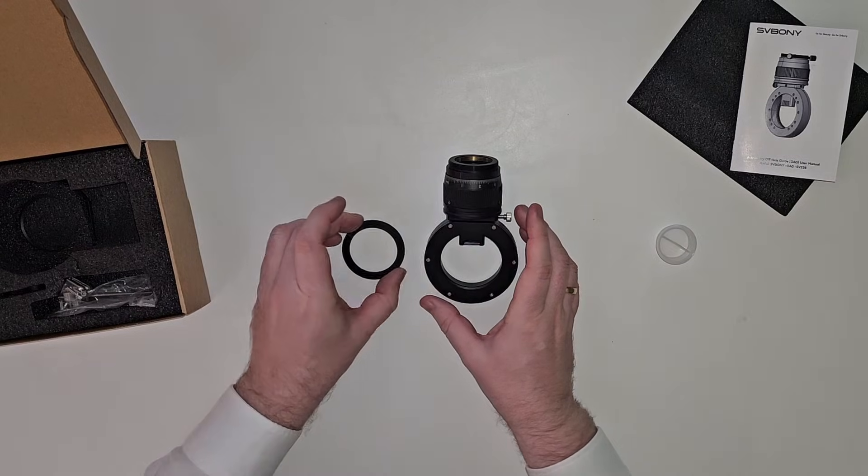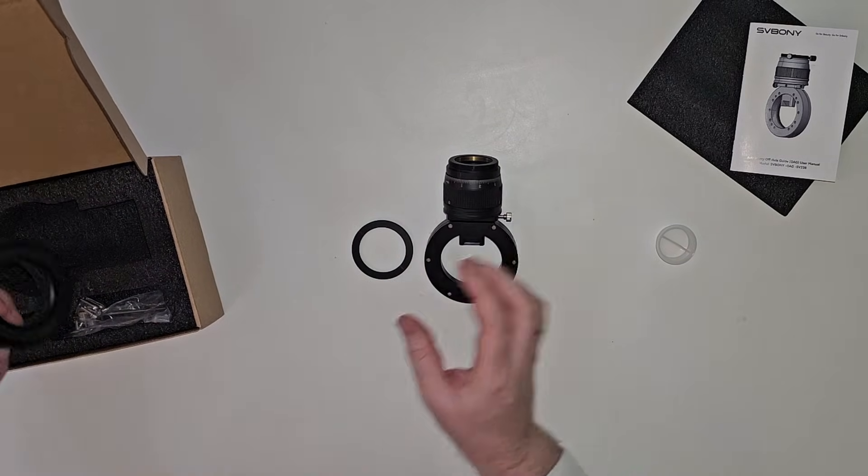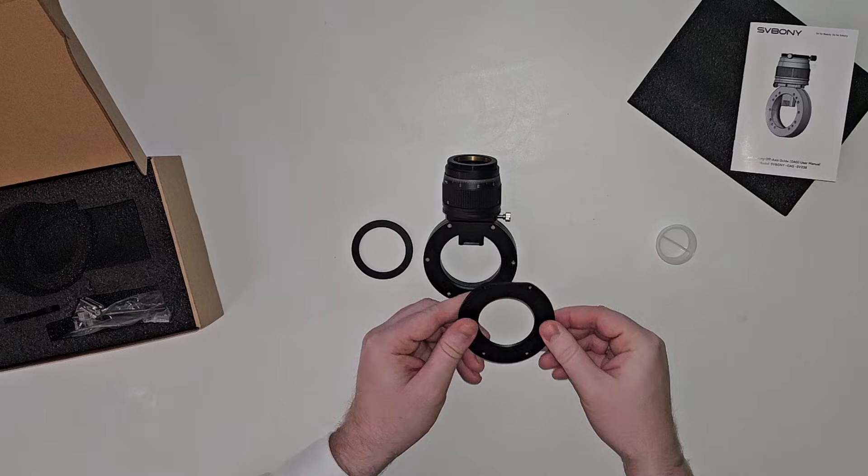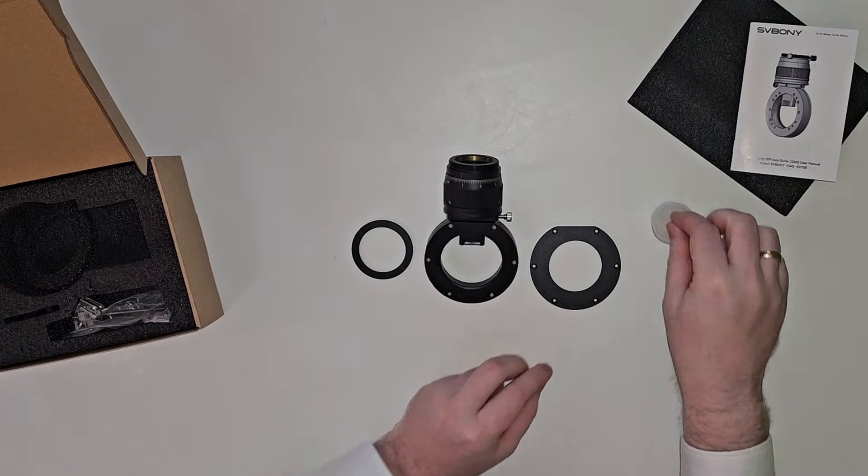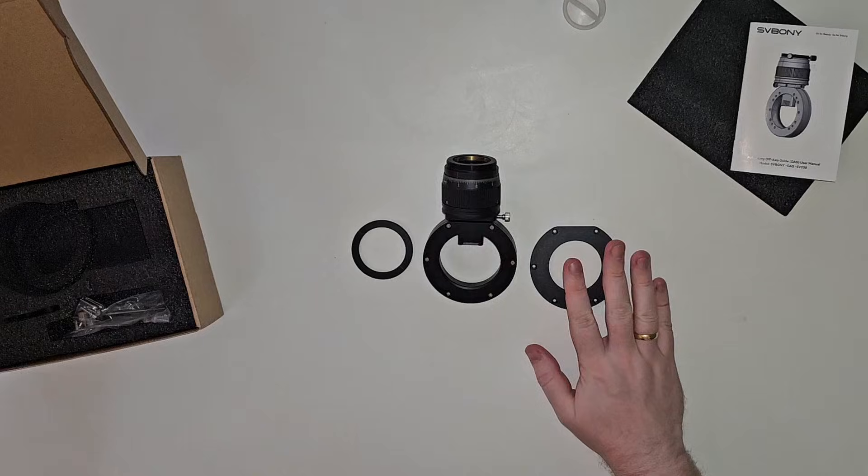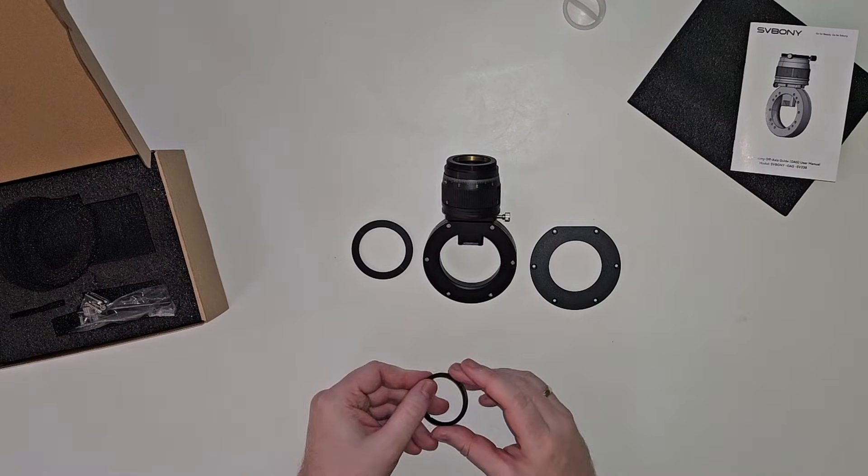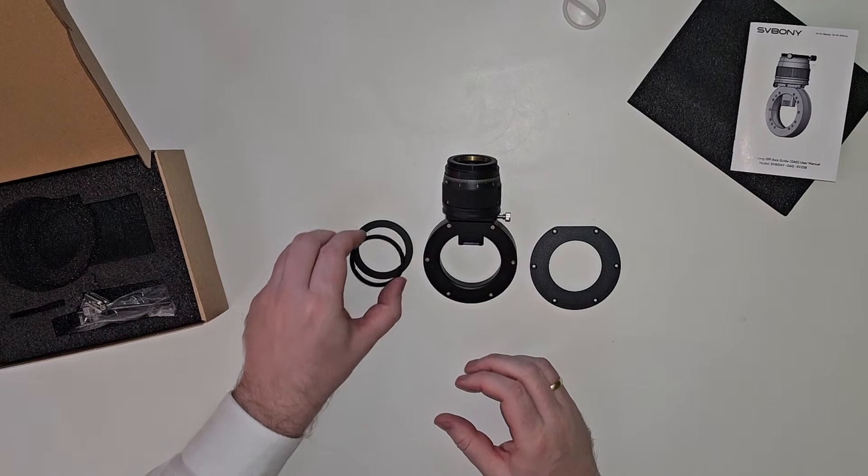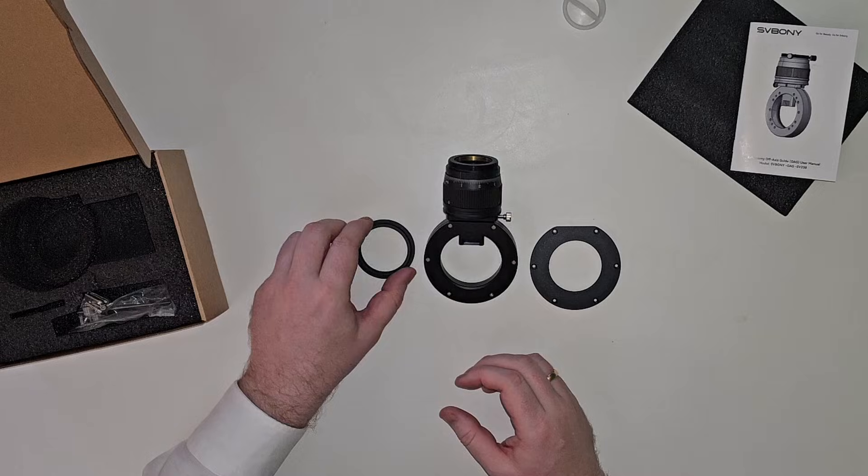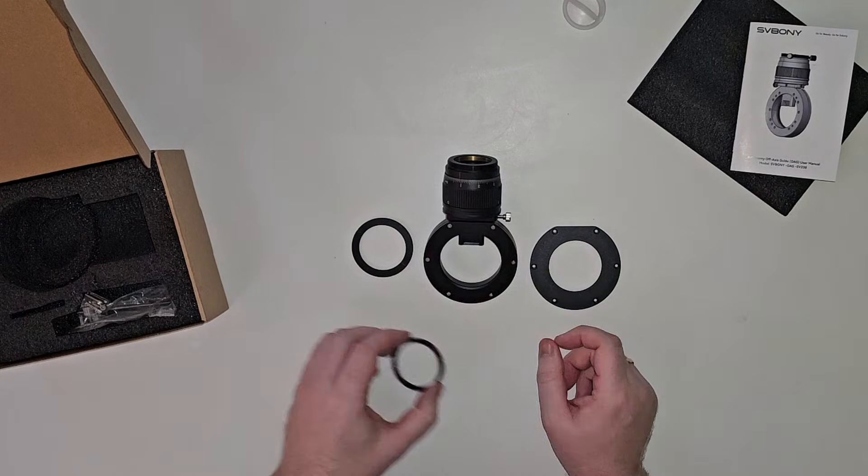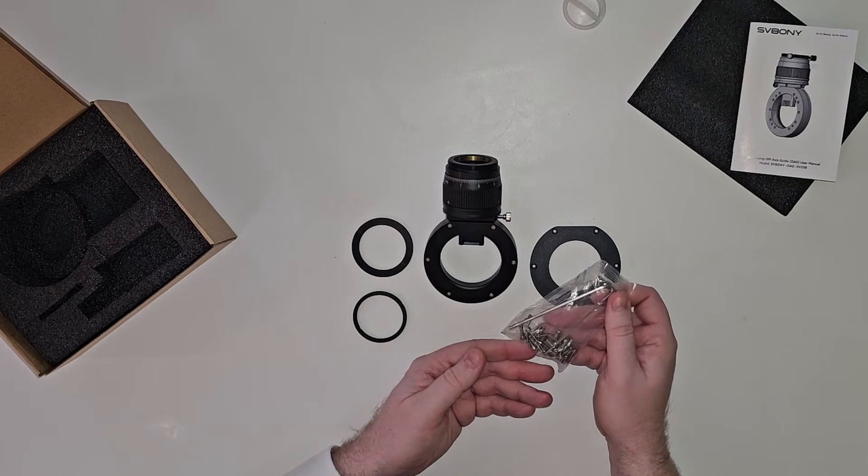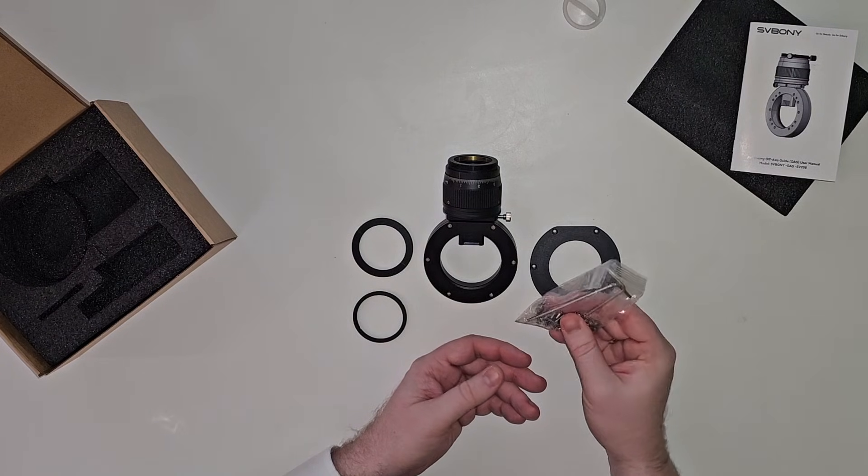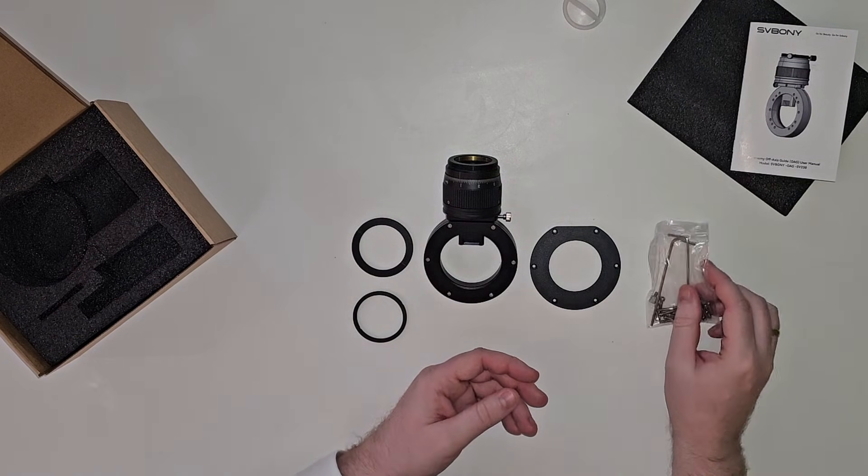So, we have that, we have a step-down to M42, then we have another plate that you can replace this with here, this is for M48. What else do we have in the box? Another step-down ring, I think this also steps down to M42, yeah, it does, and it probably fits there. Yeah, so you can step this one down as well, if you want to, and then there's just a bag of all the little screws and allen keys that you would need. Cool.